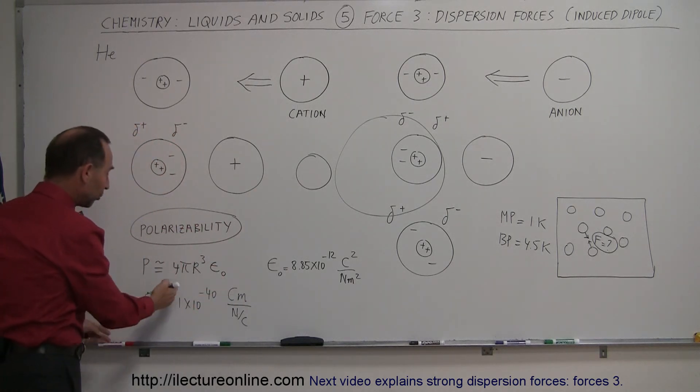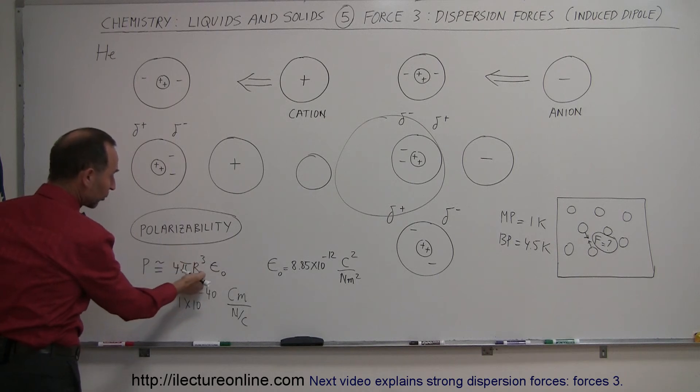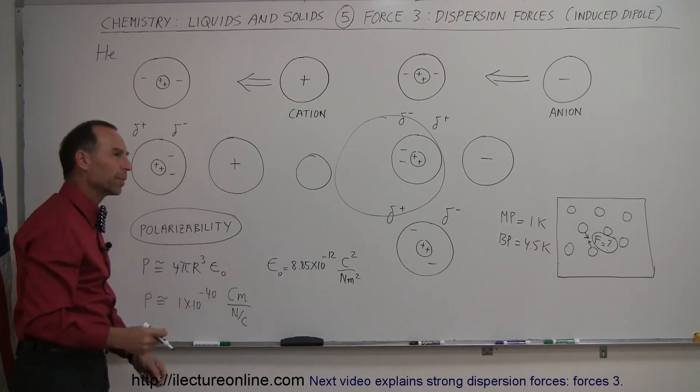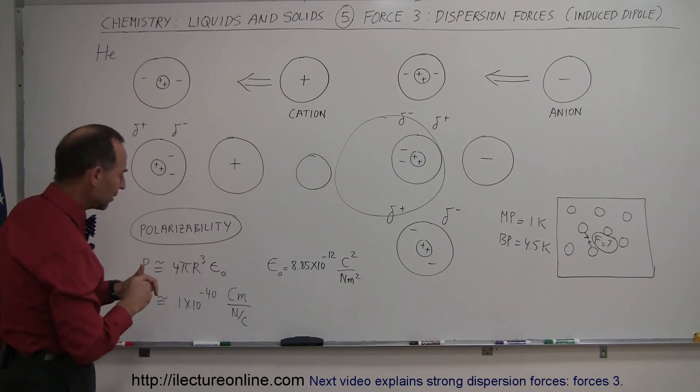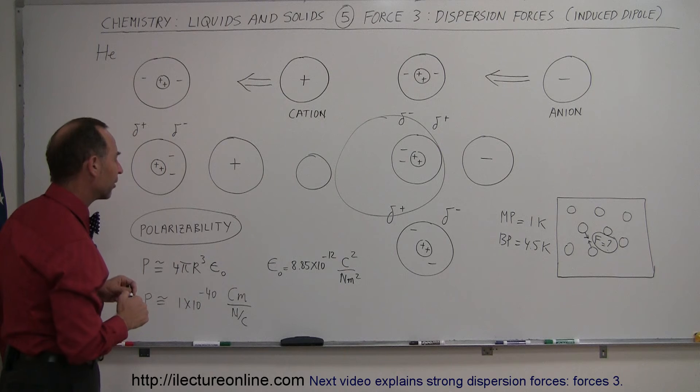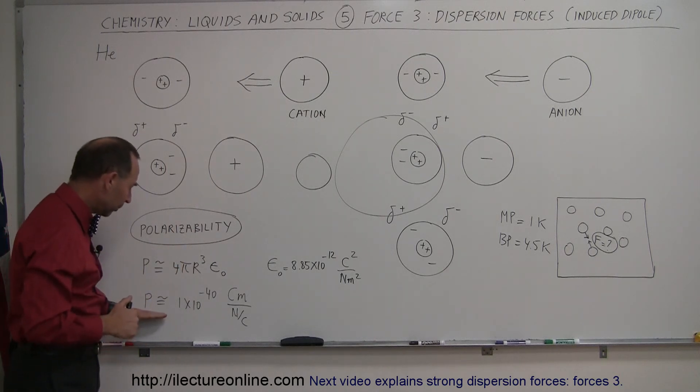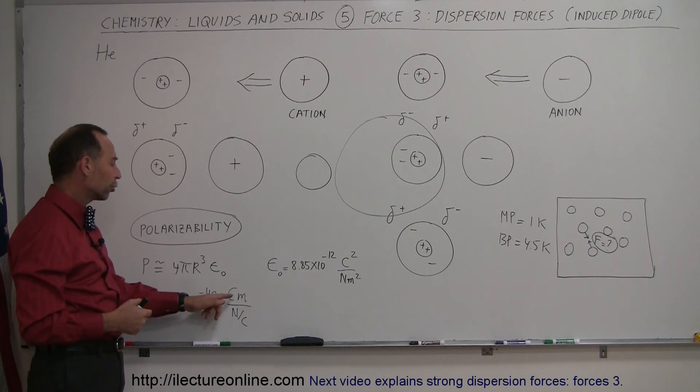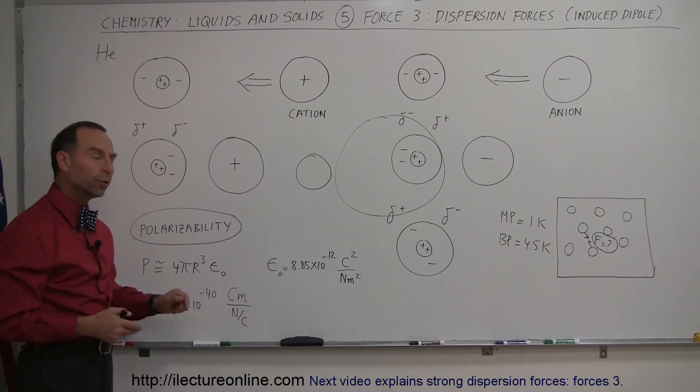So the polarizability is really a function of the volume of the molecule multiplied by epsilon sub-naught, which is the constant, that is, it's kind of the permeability of free space caused by the presence of electric fields, electric charges. The polarizability of a molecule or an atom is typically around the neighborhood of 1 times 10 to the minus 40 coulomb meters per newton per coulomb.